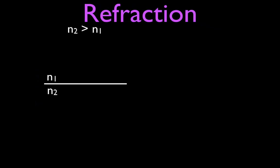Let's go through and talk about the two different cases. We have two different materials: the upper material and the lower material. The upper material has an index of refraction of N1 and the lower material has an index of refraction of N2, which is greater than N1. So this lower material has a greater index of refraction than the upper material.